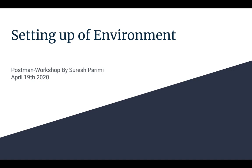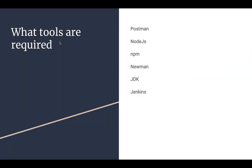In order to have a successful setup for the Postman workshop, we need a couple of tools. They are listed here: Postman, Node.js, npm, Newman, JDK, and Jenkins. Postman is the tool we are going to use for testing APIs, and we write most of our API tests in this tool. Node.js is the scripting language used to write Postman scripts, and npm is used to install dependent tools like Newman, which is a CLI interface for Postman.